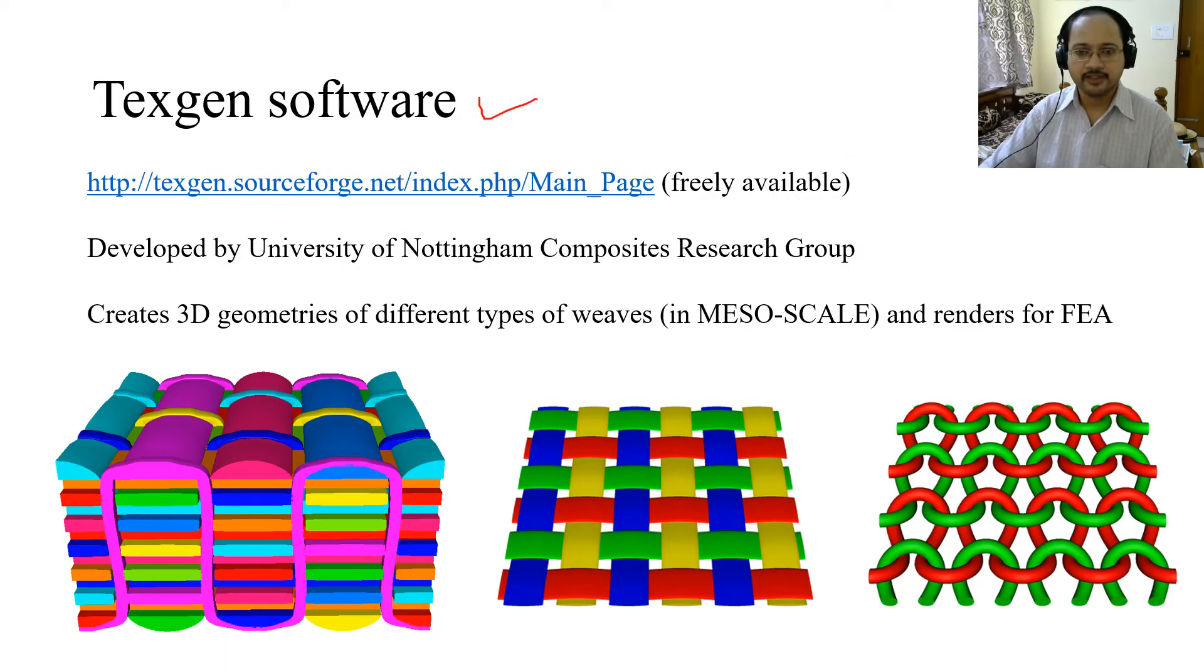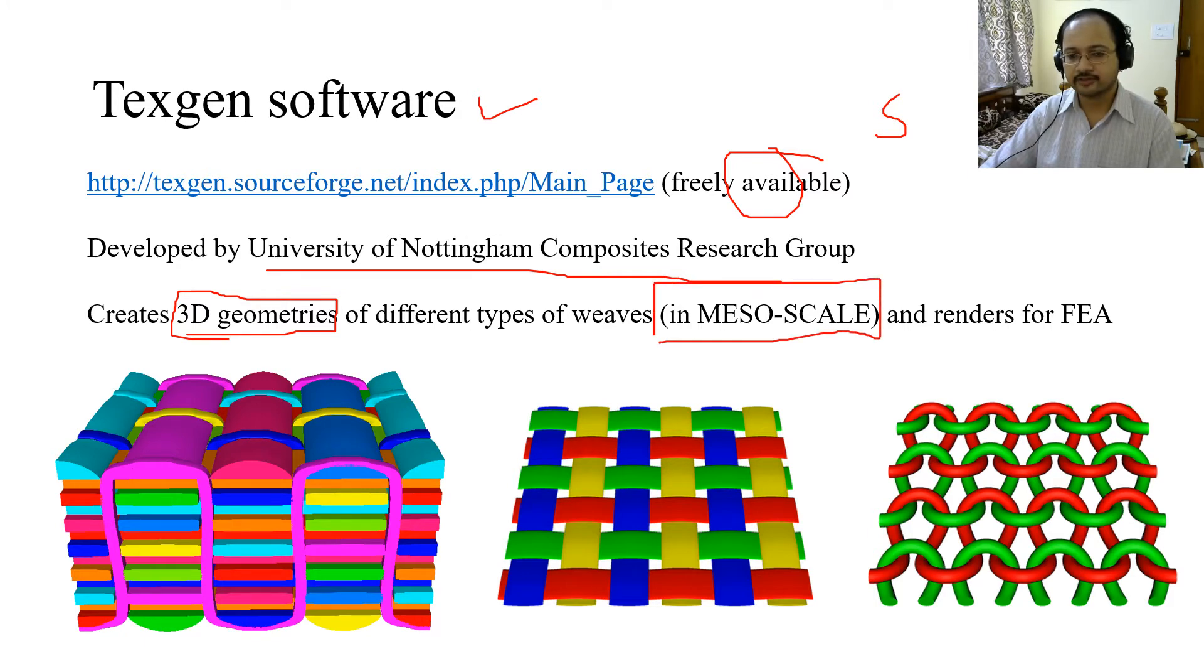Now coming to the Texgen software, this software is developed by the University of Nottingham Composites Research Group and is freely available. The link is in the description. You can see the different orientations which have been developed using a variety of mathematical models. These CAD geometries, these 3D geometries, are very helpful if you are doing simulation work. These are called mesoscale. Why? Because in microscale we consider the fibres, in mesoscale we talk about the bundle of fibres. These are homogenous bundles in mesoscale and this helps to render for finite element analysis.